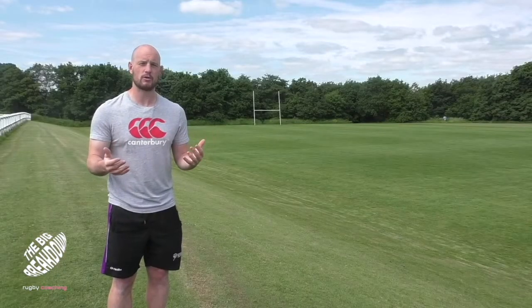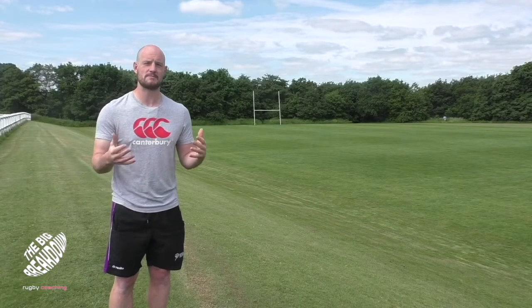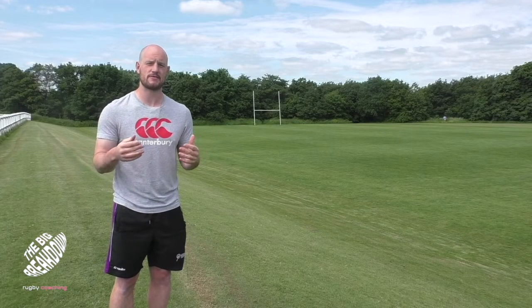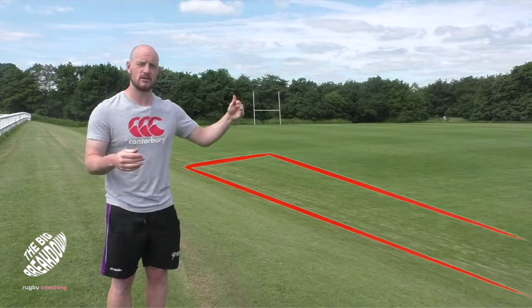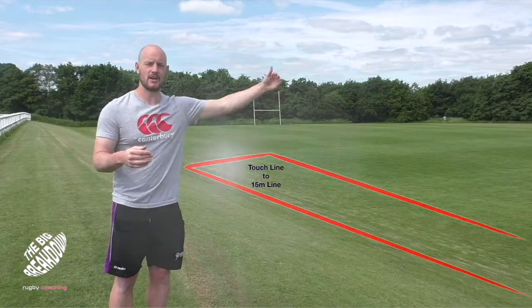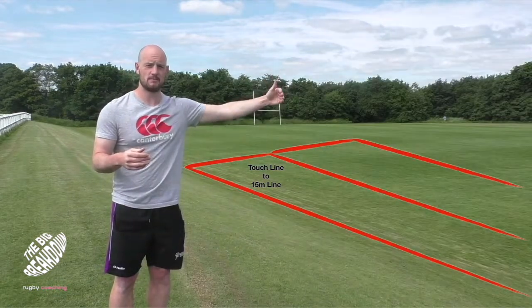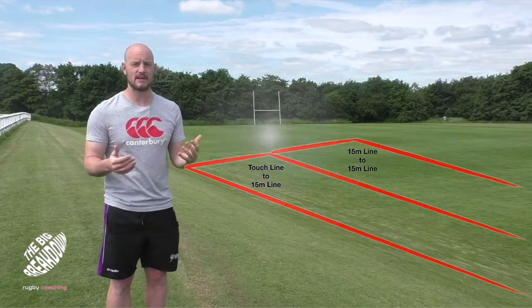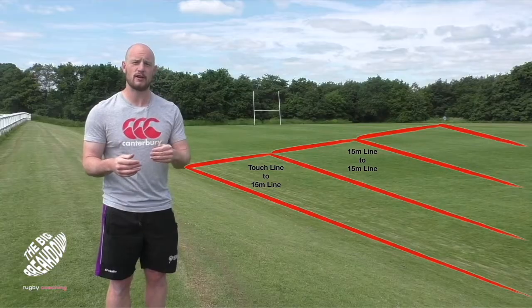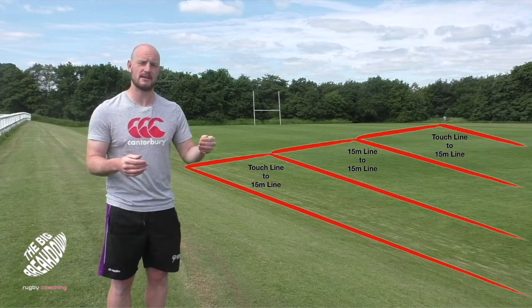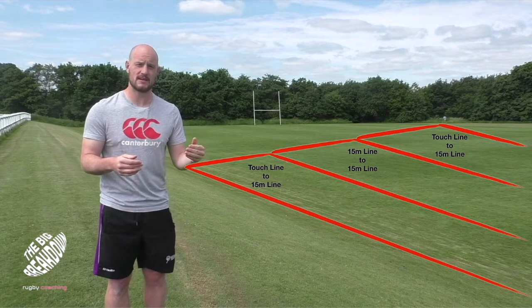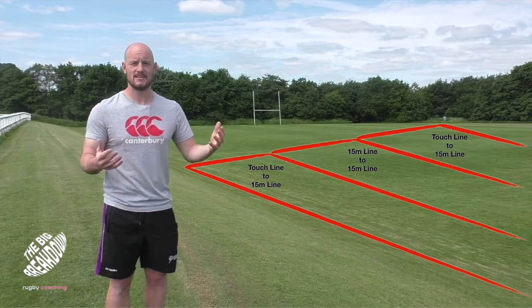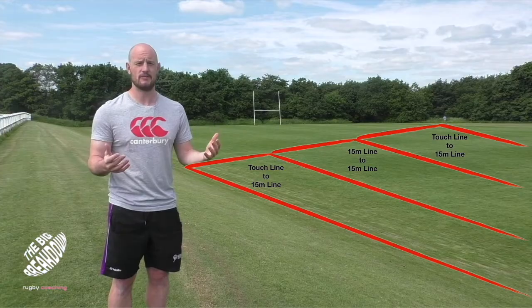First of all, the game. Quite simply, all we're going to do to start with is split the pitch up into three key areas: your wide channel, your middle, and your other wide channel. The key rule is you cannot be touched in the same zone twice — if you are touched in the same zone twice, it's an immediate turnover.